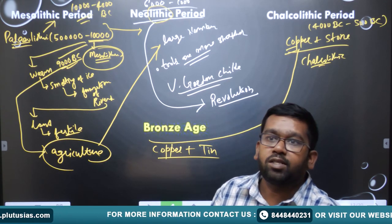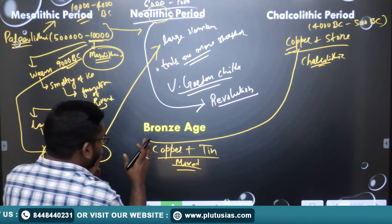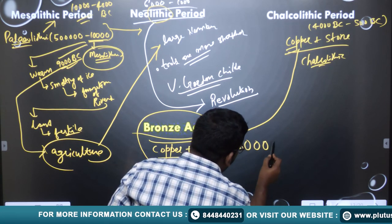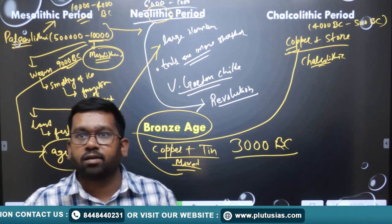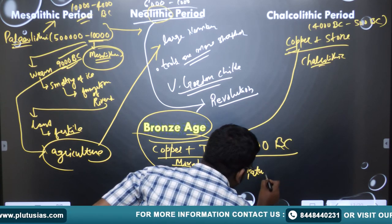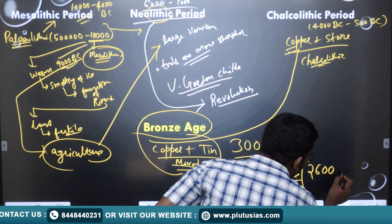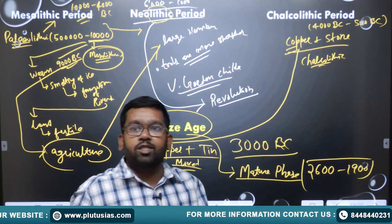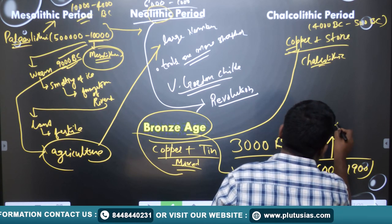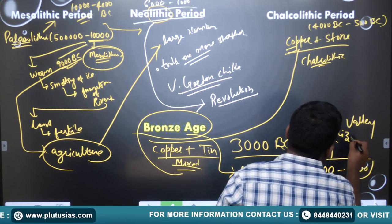People were using copper, and they also discovered tin. When copper and tin were mixed together, it produced bronze. In India, around 3,000 BC, the Bronze civilization starts. The mature phase of this Bronze civilization in India was from 2,600 to 1,900 BC. This period of Indian history, especially in northwest India, is known as the Indus Valley Civilization.